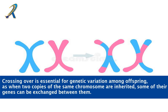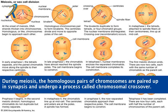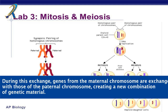Crossing over is essential for genetic variation among offspring, as when two copies of the same chromosome are inherited, some of their genes can be exchanged between them. During meiosis, homologous pairs of chromosomes are paired up in synapsis and undergo chromosomal crossover, where genes from the maternal chromosome are exchanged with those of the paternal chromosome, creating a new combination of genetic material.